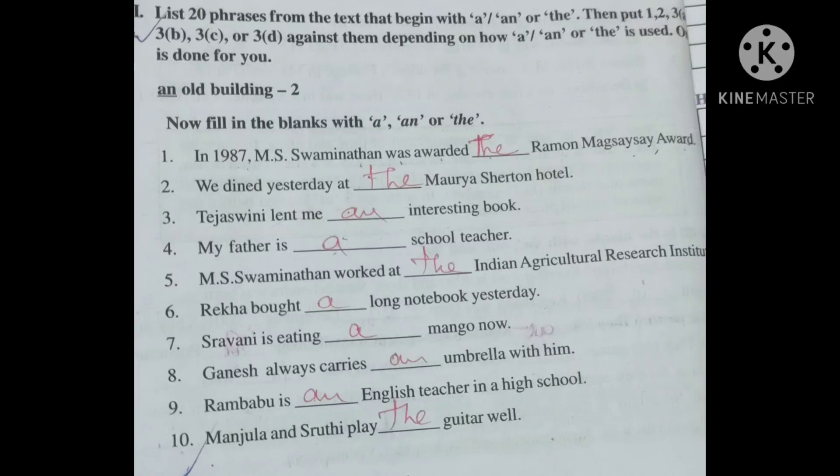Rekha bought a long notebook yesterday. A long. Sravani is eating a mango now. Ganesh always carries an umbrella. U has a vowel sound, not a consonant. An umbrella.